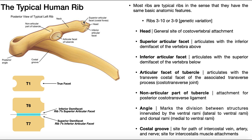When we talk about typical ribs having a superior articular facet and an inferior articular facet, the superior articular facet of the rib articulates with the inferior demi-facet of the vertebra above, and the inferior articular facet of the rib articulates with the superior demi-facet of the vertebra below. One facet goes in one demi-facet; the other articular facet goes in the other demi-facet. Remember: demi-facets are shared between two vertebrae, while a full or true facet is contained in one vertebra.